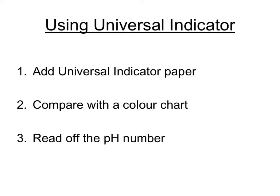When using a universal indicator there's three stages. You have to add some universal indicator paper, then compare the colour that you see with a colour chart and read off from that colour chart the pH number of the solution.